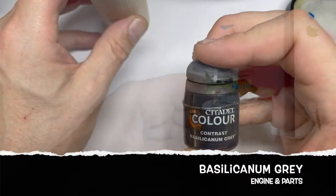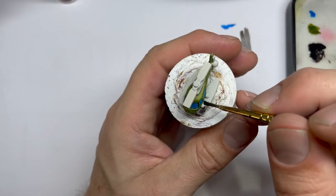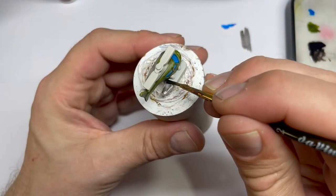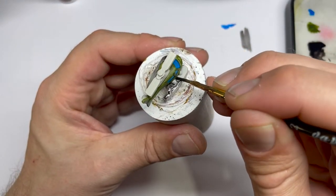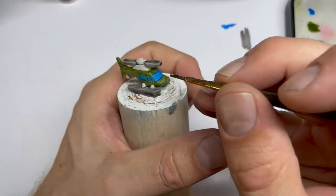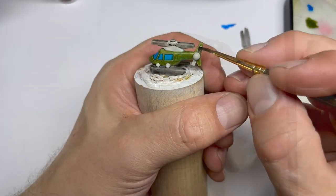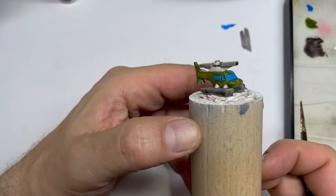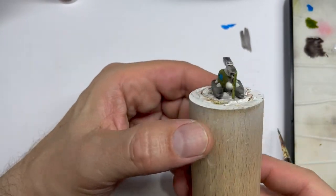Next is Basilicanum Gray. This is only for the engine and some parts, but I started also to paint the skids and the blades and the rotor blades and stuff like that. Because at this point I wasn't really sure which day and which color, so I started with the Basilicanum Gray.